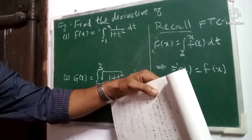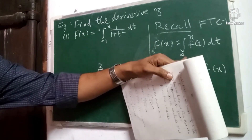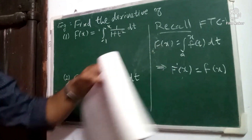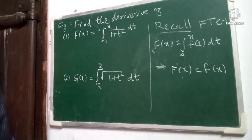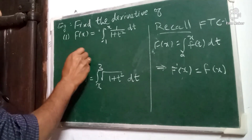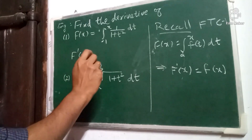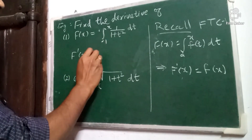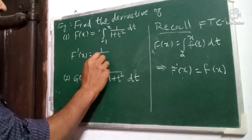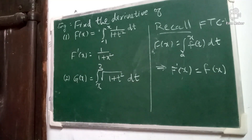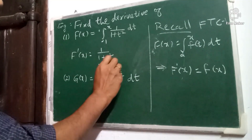The lower limit is irrelevant. The derivative of F(x) is the value of the integrand at the upper limit. So what is F'(x)? According to the fundamental theorem of calculus formula, it is the integrand evaluated at the upper limit, which means 1/(1+x²). That is the answer.